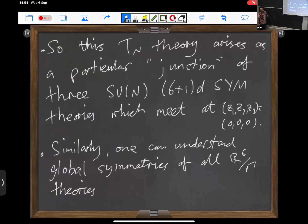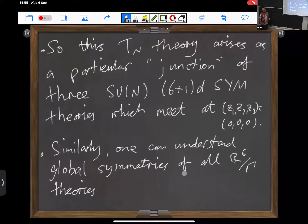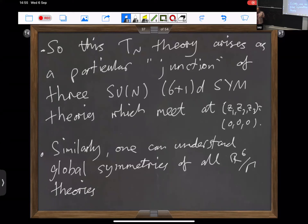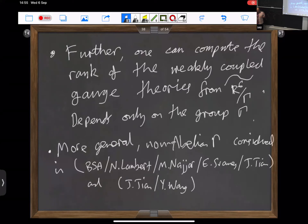We can think of these TN theories as a trivalent junction of 7D super Yang-Mills theories. You can apply this kind of logic to all of the examples of this kind, which is something we did in some of these papers.